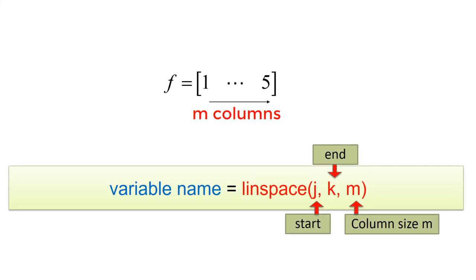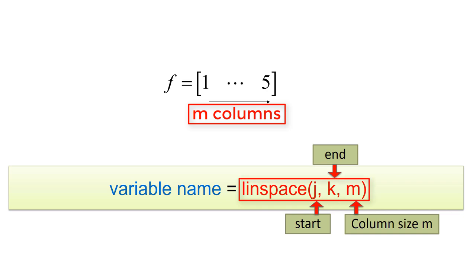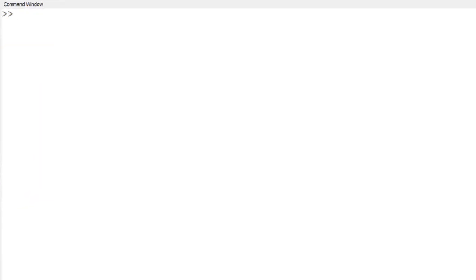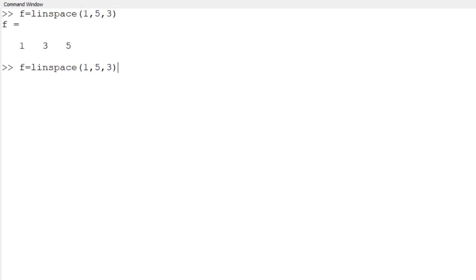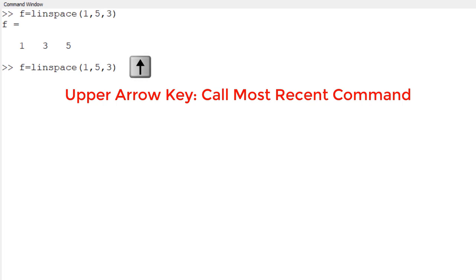Sometimes we need to create a row vector with a certain number of elements from a start and end with equal spacing. For example, create a row vector between 1 and 5 with equal spacing for different column sizes. Use the built-in function 'linspace', which represents linear space. It requires the first element J, last element K, and column size M. If you skip M, the default is 100. To create a 1 by 3 row vector from 1 to 5, type 'F = linspace(1, 5, 3)' — starting at 1, ending at 5, with 3 elements and spacing of 2.